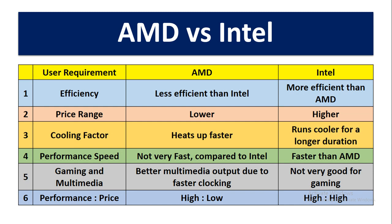In that, the first one is efficiency. The AMD processor is less efficient than Intel processor, and Intel processor is more efficient than AMD processor. And for price range, the AMD processor cost is lower and Intel processor cost is higher.